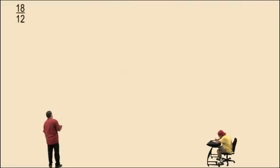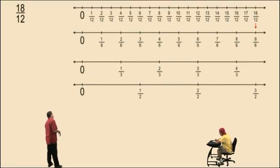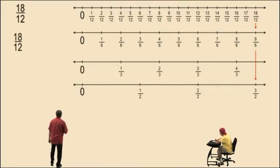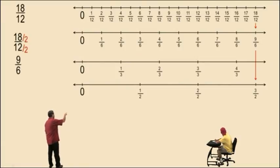How about 18 twelfths? Well, looking at the number line, we see 18 twelfths is equivalent to 9 sixths, which is equivalent to 3 halves. So 18 and 12 have a common factor of 2. If we divide top and bottom by 2, notice we get 9 sixths. 9 sixths, right?